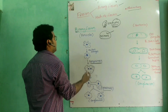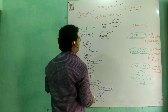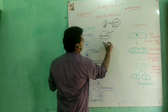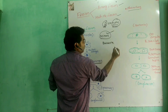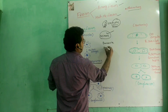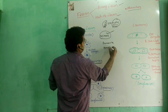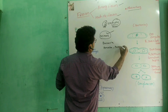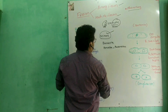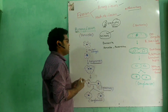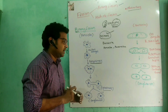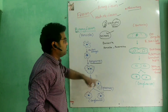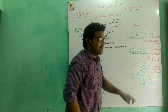Where do we find binary fission? Binary fission is found in bacteria, protozoa, amoeba, and paramecium. Bacteria and amoeba and paramecium all reproduce by binary fission.